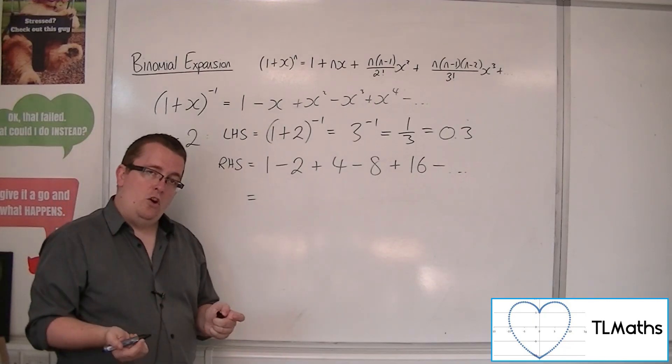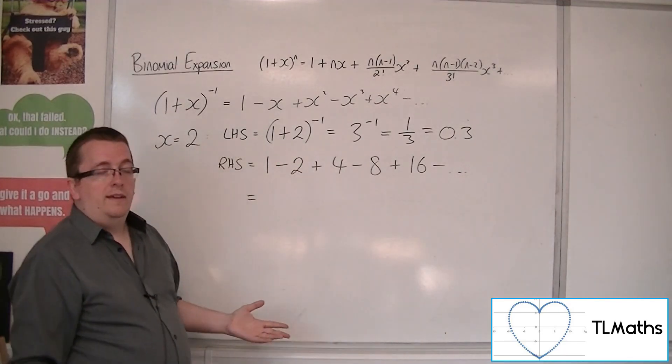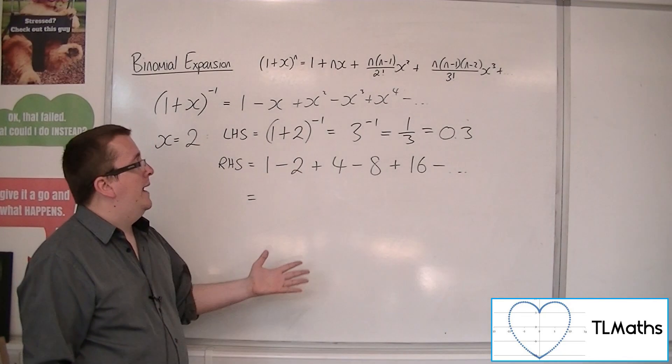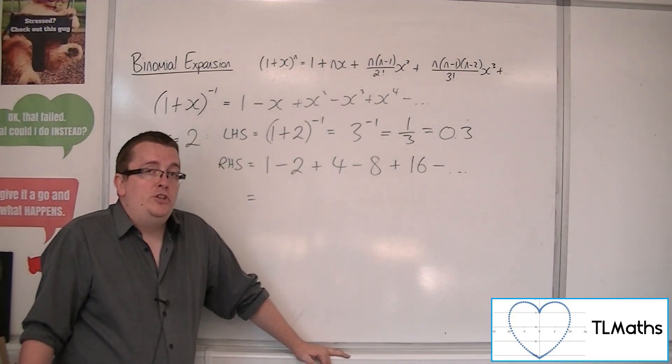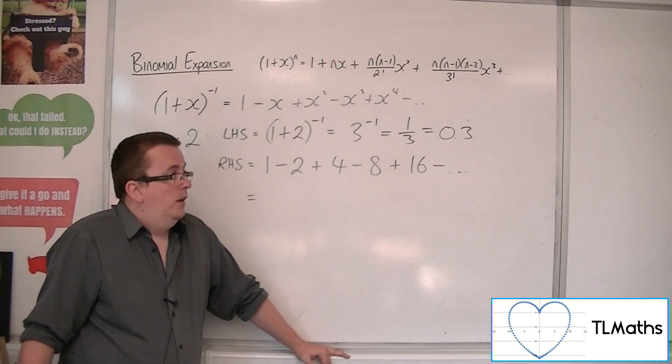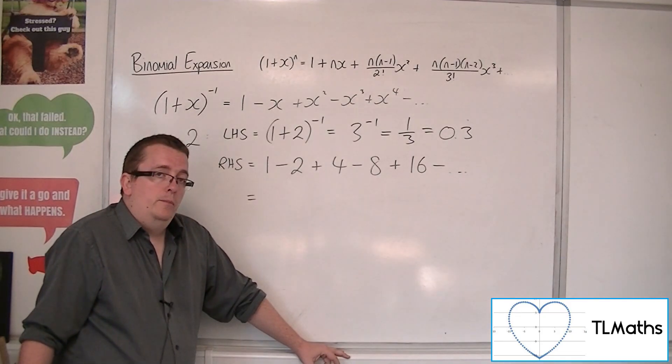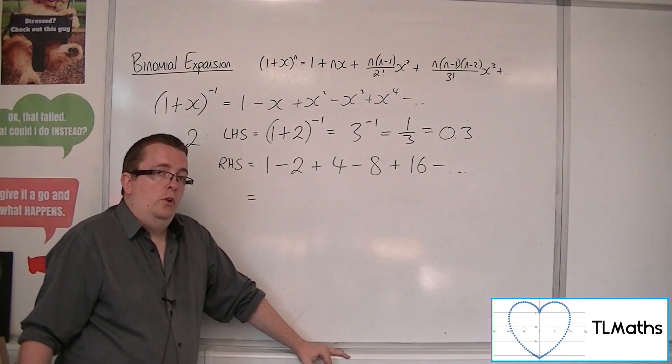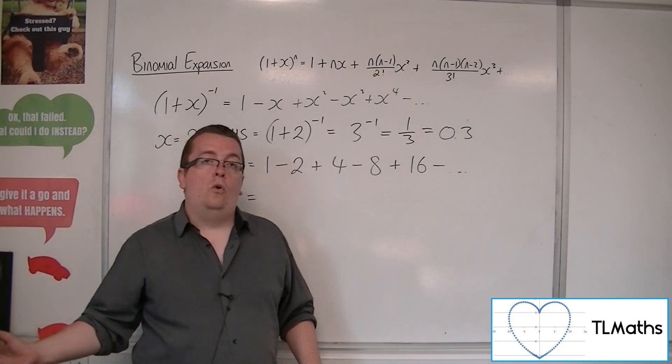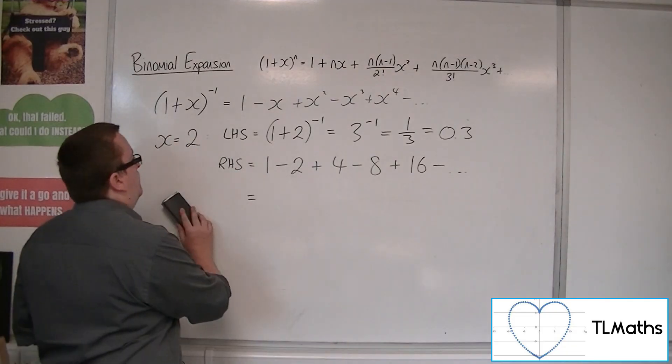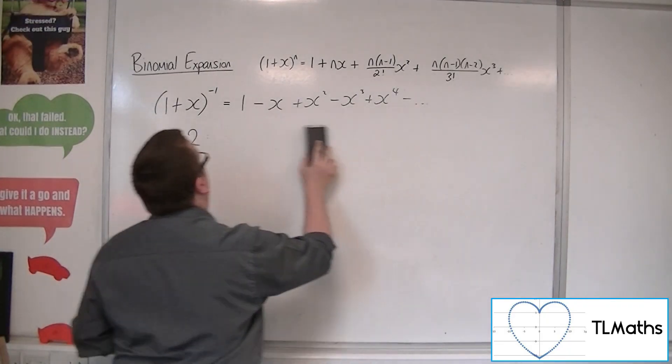So, the more terms I'm adding on as I go down this list, I'm actually getting further and further and further away from the 0.3 recurring, from the 1 third. And so, it's diverging away. So, in actual fact, it worked for a half, but it didn't work for 2. So, there appears to be certain values that will work and some that won't. And we refer to this as the range of validity.